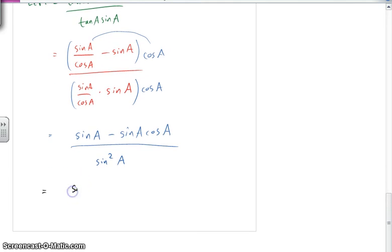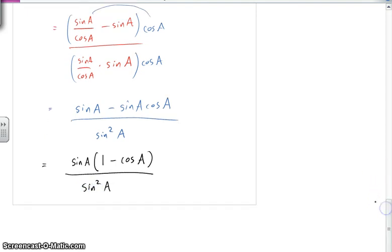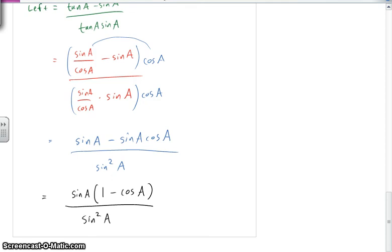So I've got sine A, and I've got 1 minus cosine of A, and that's over sine squared A. Now at this point, I noticed that yes, I could cancel out one of the sines here.